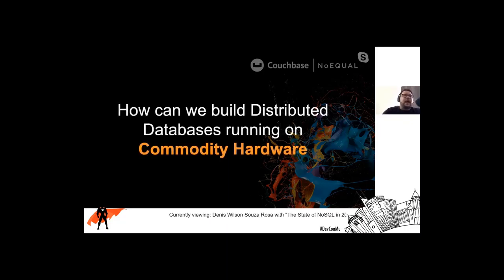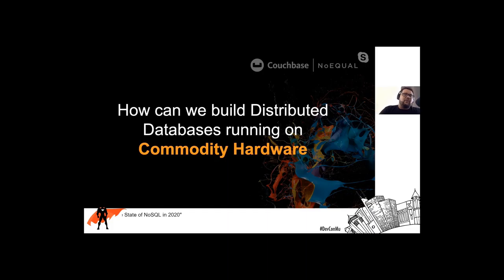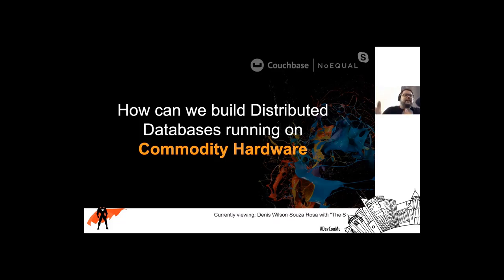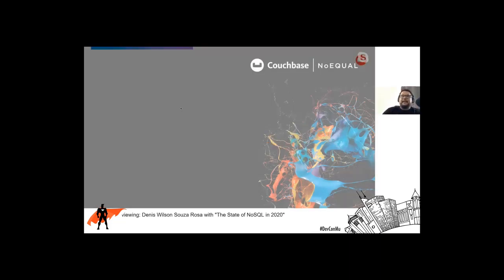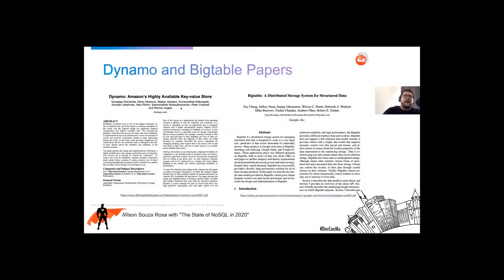That was a problem that Google and Amazon had roughly 20 years ago. Back then they were using Oracle, and they were hitting limits. One of the problems with Oracle, Teradata, and some other databases is that they quite often rely on specialized hardware. Oracle wasn't hitting the scale that Google needed. So they decided to create their own database that runs on commodity hardware. A few years later, both Amazon and Google published two famous papers: Dynamo from Amazon and Bigtable from Google.